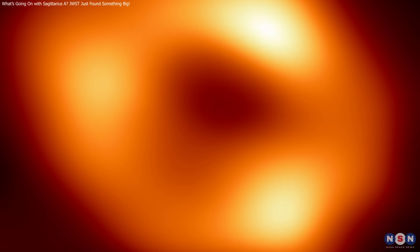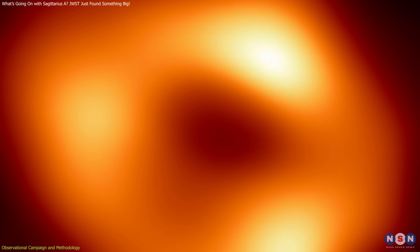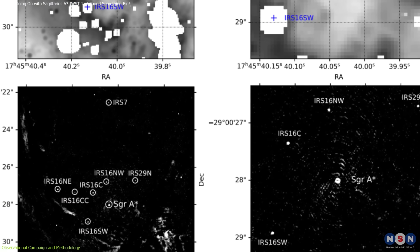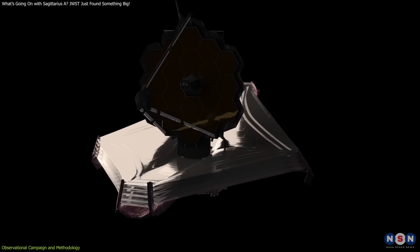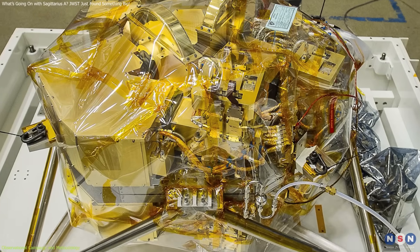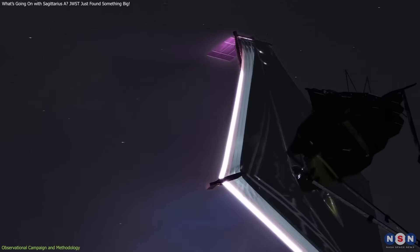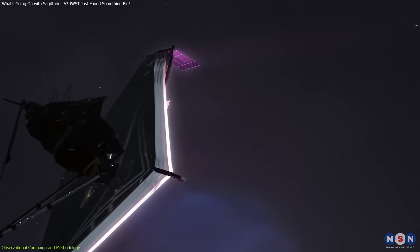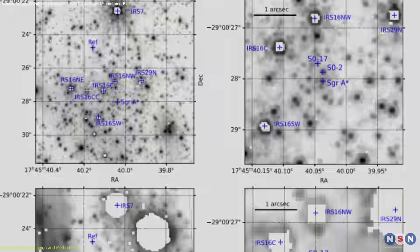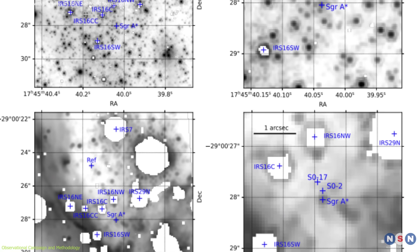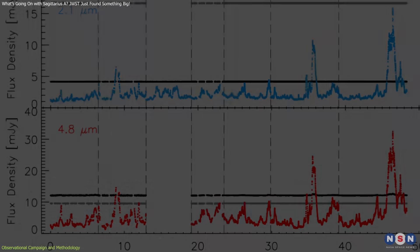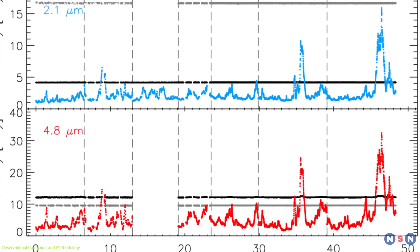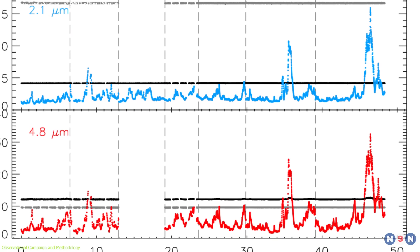The journey to uncover the secrets of Sagittarius A-star's flaring activity began with an ambitious observational campaign utilizing the unparalleled capabilities of the Webb. Equipped with the Near Infrared Camera, Webb went on a mission to monitor the galactic center with unprecedented precision. Over the course of 2023 and 2024, researchers conducted a series of observations, dedicating a total of 48 hours to scrutinize Sagittarius A-star.